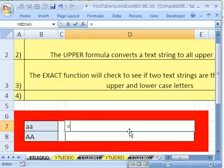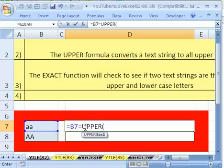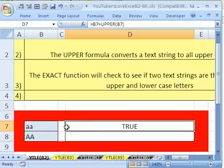Well, let's try something else. Let's say equals this equals upper. Now, that will convert. Upper will officially convert lowercase to uppercase. So let's see if we can trick Excel this way, and then enter. Uh-oh, it's still true.